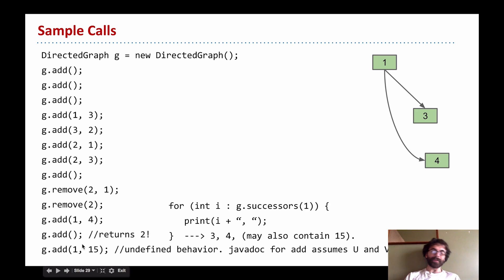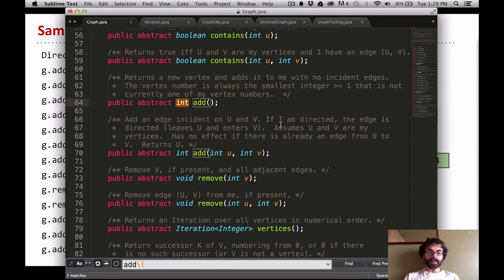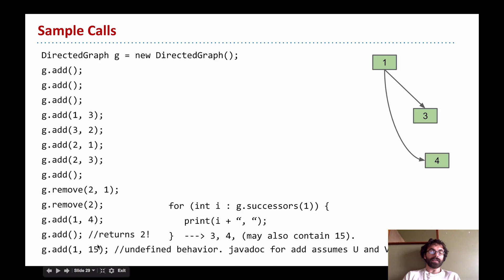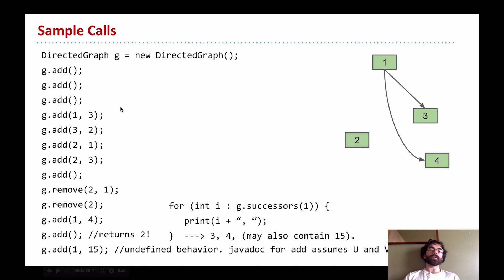I can also add an edge from 1 to 15. If we look carefully at the comment, it says it assumes that u and v are valid vertices — so if that assumption is false, the method can do anything you want; you can throw an exception or do something arbitrary, it doesn't matter. If someone does this they're just using your class wrong. So if I iterate through successors of vertex 1, I'll certainly see 3 and 4, but I might also see 15 — because that behavior is undefined.